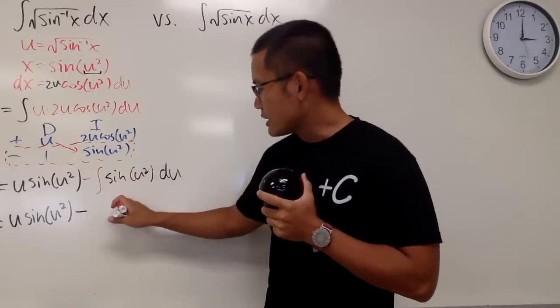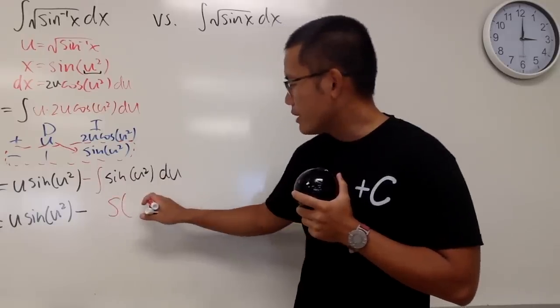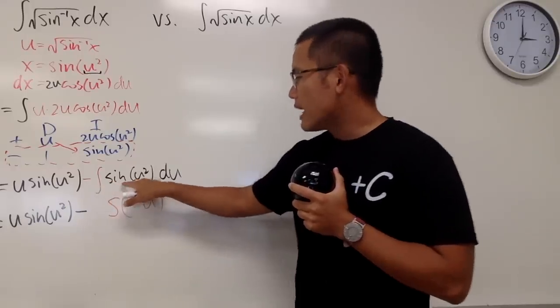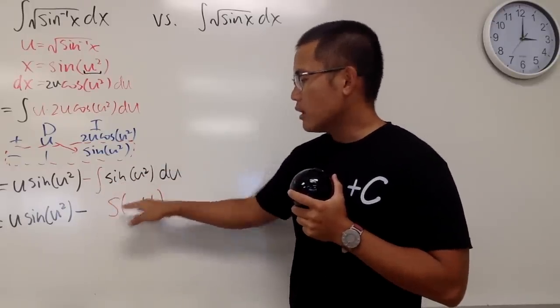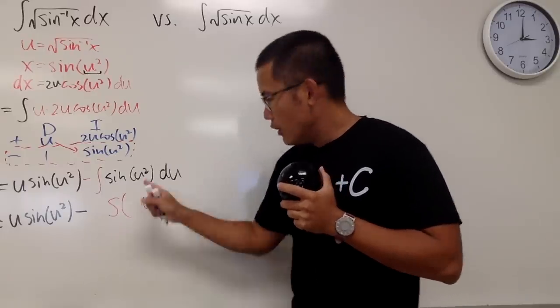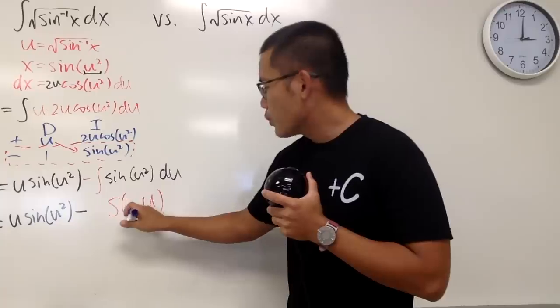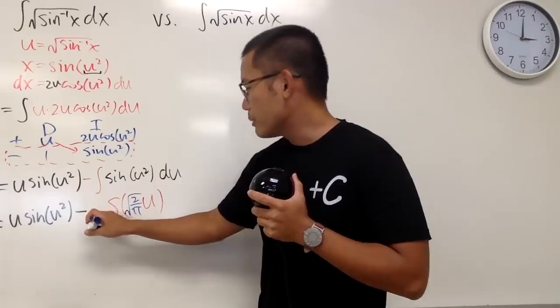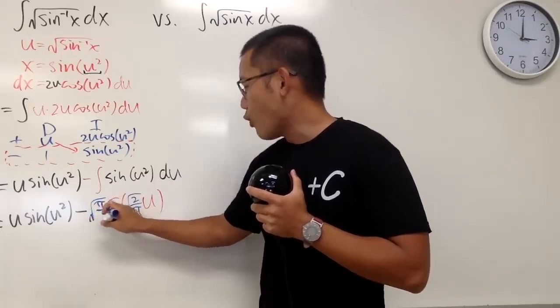let me just tell you guys what this is. The Fresnel integral, the sine version, so you just put down S, and the input right here is just u, right? Remember, when we have sine of u squared, we get S of u, and don't forget the constants right here and right here. For the inside, we have to multiply by the constant, square root of 2 over pi, and on the outside, we have to multiply by square root of pi over 2.